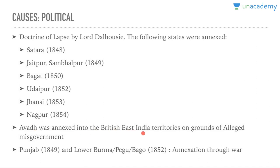Awadh was annexed into the British East India on grounds of misgovernment or alleged misgovernance — not for any other reason. Punjab and Lower Burma, also called Pegu earlier and now called Bago, were annexed through war. Punjab wars — everyone knows the First Anglo-Sikh War and Second Anglo-Sikh War of 1845-46 and 1848-49 — we will talk about these later in modern Indian history.